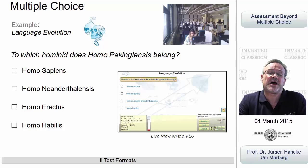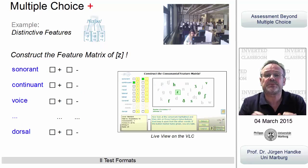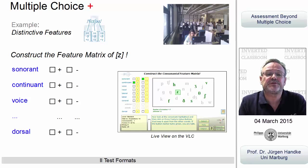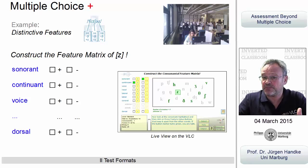Such simple tests have in many cases on the Virtual Linguistics Campus been extended to what we call multiple choice plus, where the choice influences the set of alternatives. In this test on distinctive features, students have to construct a matrix, making yes-no or plus-minus decisions.